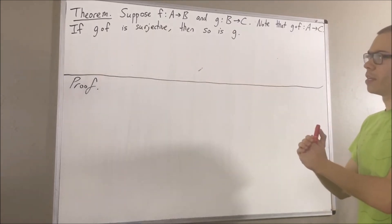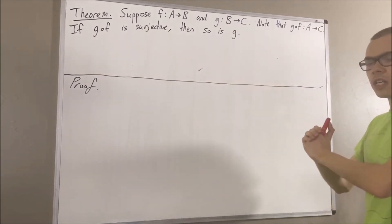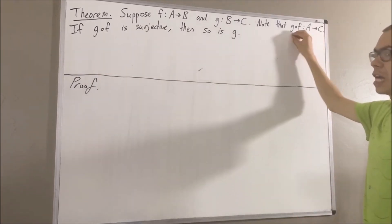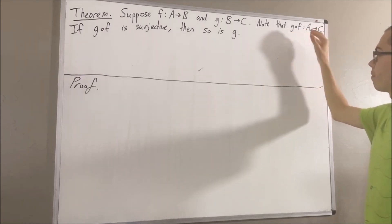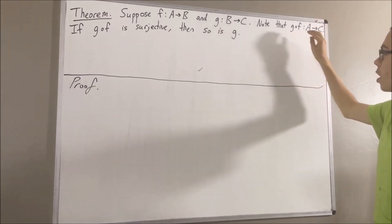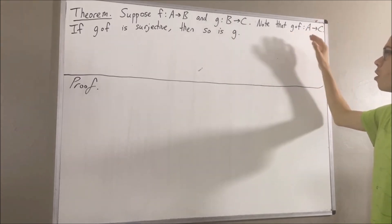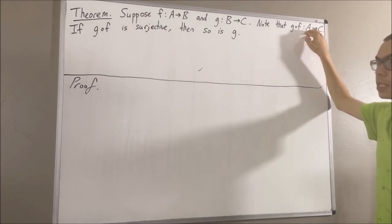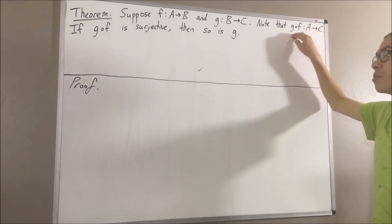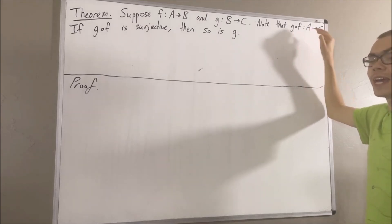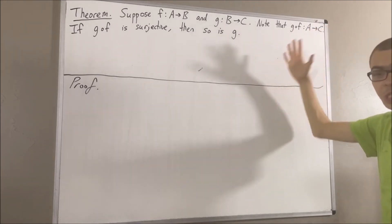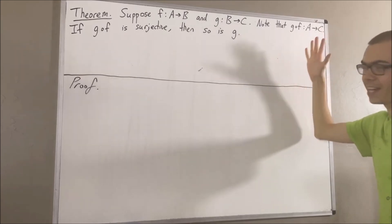Now first let's remind ourselves how composition functions work. We know for all elements x in A, g compose f evaluated at x is equal to g of f of x.